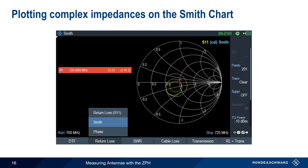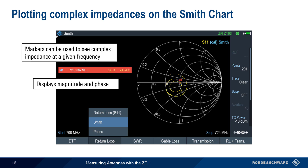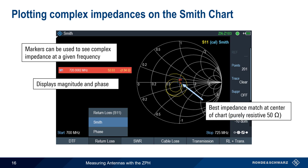The last display format we'll look at is the Smith chart. Unlike SWR and return loss, the Smith chart displays complex impedances, that is, both magnitude and phase. As with the other display formats, markers can be placed on the Smith chart, and these will provide the complex impedance at a given frequency. We don't have time to go into details about the Smith chart in this presentation, but note that the best impedance match, corresponding to the lowest SWR or highest return loss, will be the point closest to the center of the Smith chart.